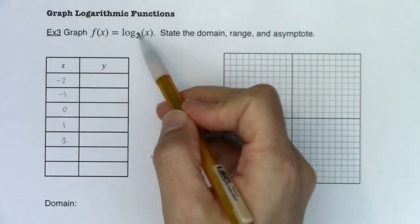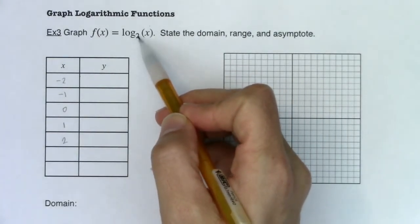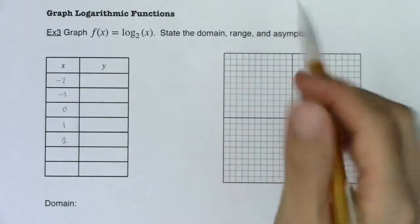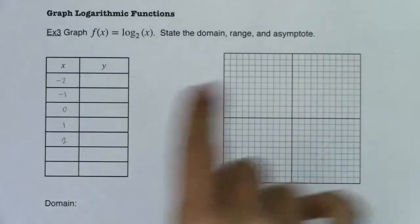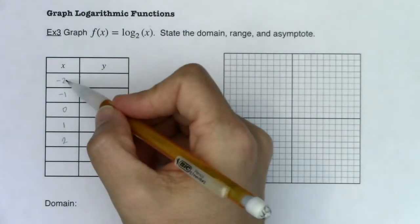So let's try this. First, just take note that my base is greater than one. So this is going to be a graph of logarithmic growth, so I should be increasing as I move left to right. Alright, so let's try and do this.